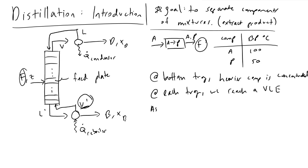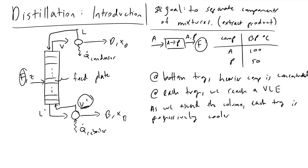As we ascend the column, each tray is progressively cooler. Moving to the tray above the bottoms tray, the temperature is slightly lower. Because of that, whatever heavy component existed in the vapor phase entering that tray will want to condense into the liquid phase and fall back down the column. Whatever lighter component existed in the vapor phase will stay in the vapor phase. We reach this vapor-liquid equilibrium at each tray as we move up the column.